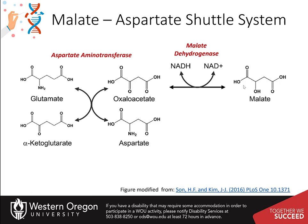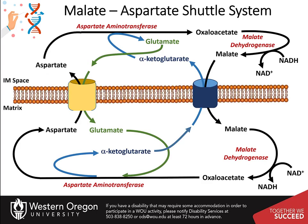That NADH can then be used by complex I in the electron transport chain. Here is the schematic of that shuttle process. Essentially, oxaloacetate is converted to aspartate, where it can be transported into the cytosol. Once in the cytosol, it is then converted back into oxaloacetate and reduced to malate using cytosolic NADH as the electron donor. The electrons are then carried back into the matrix of the mitochondria on the malate molecule, where they re-enter the Krebs cycle.